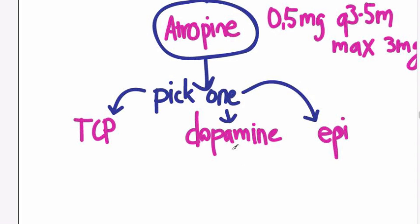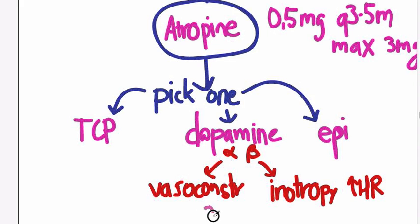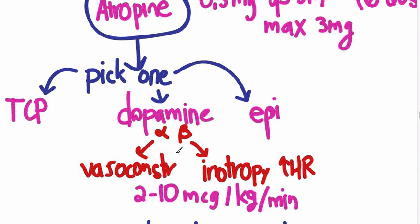Dopamine is an alpha and beta agonist. At higher doses, the alpha predominates, giving more vasoconstriction. At lower doses, the beta predominates, giving more inotropy and increased heart rate. The dose is 2 to 10 micrograms per kilogram per minute. For the most part, you won't need vasoconstrictive doses — if the patient is hypotensive, volume is most likely what you need, unless the patient is septic or anaphylactic and needs peripheral vasoconstriction.